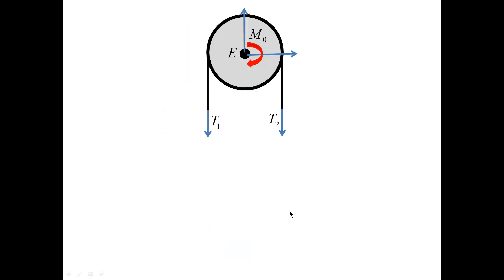The free body diagram for the wheel requires us to write only one equilibrium equation, sum of the moments about E. This equation establishes a relationship between applied torque M0 and the forces in the cable T1 and T2.